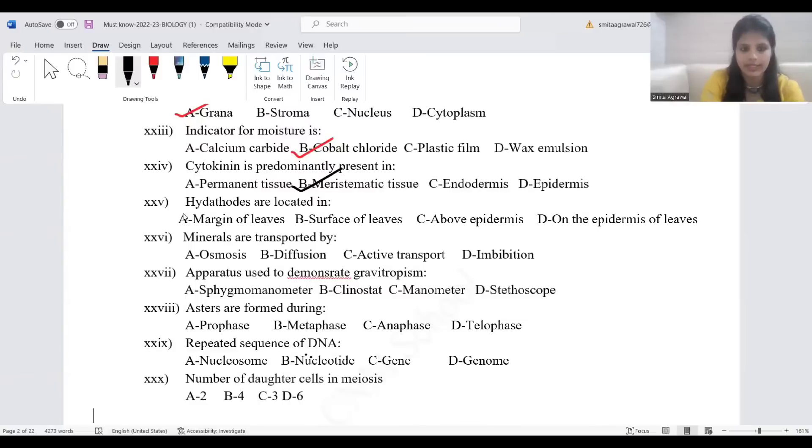Hydathodes are located in margin of leaves. Minerals are transported by active transport. Water transport uses osmosis. Gaseous transport uses diffusion. Apparatus used to demonstrate gravitropism or geotropism, the correct answer is clinostat.